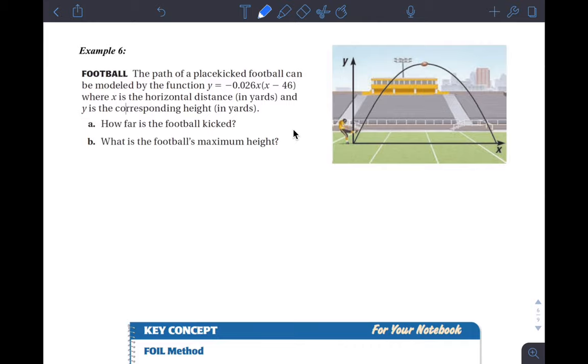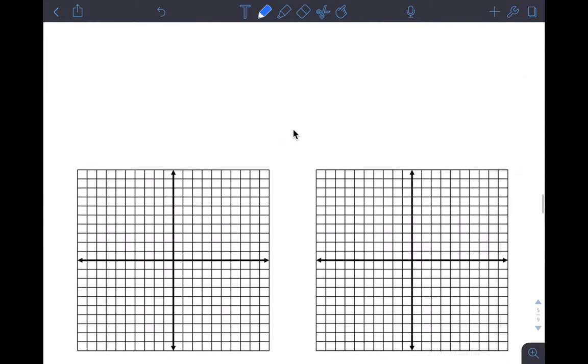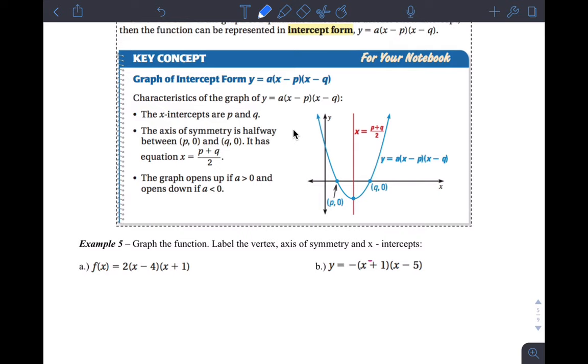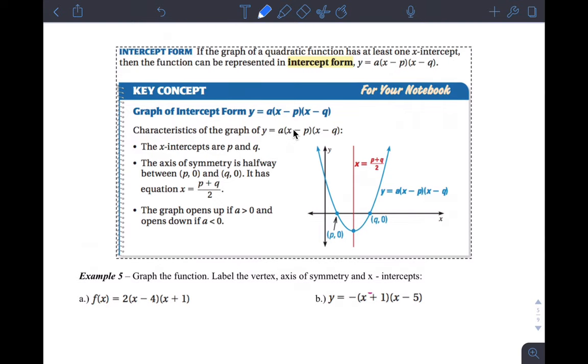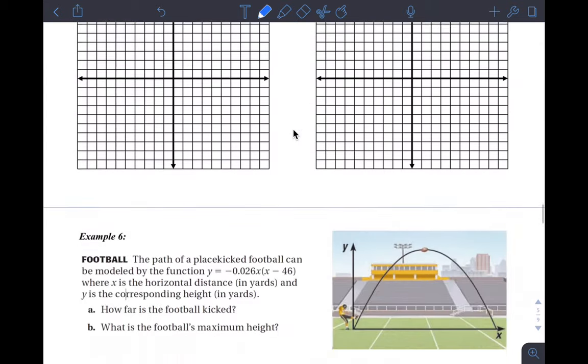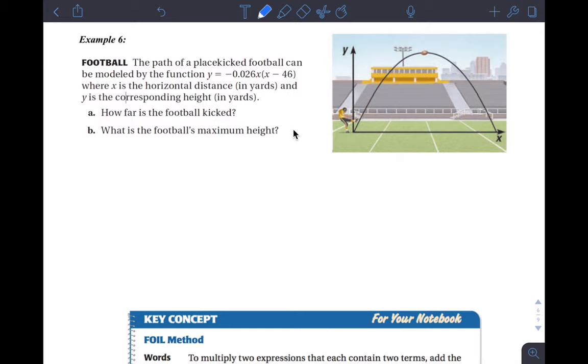Example 6 is a little problem-solving question. We have spoken about intercept form previously in class. Intercept form looks like this where basically p and q are the x-intercepts of the graph of the quadratic function, or the x-intercepts of the parabola.